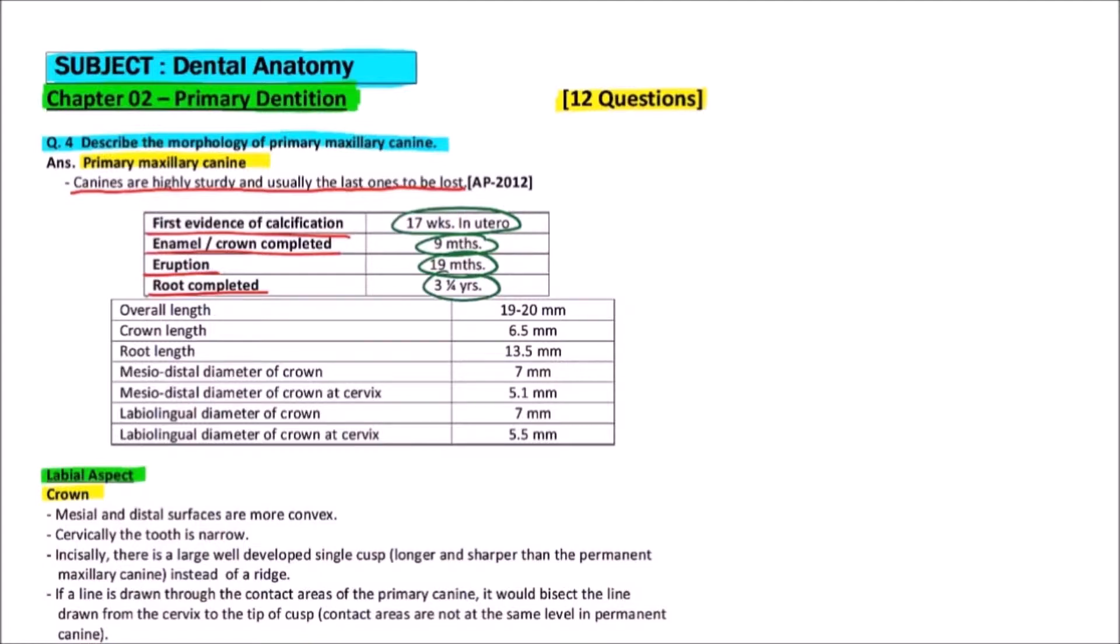The overall length is 19 to 20 millimeters, in which the crown is 6.5 millimeters and the root is about 13.5 millimeters in length.